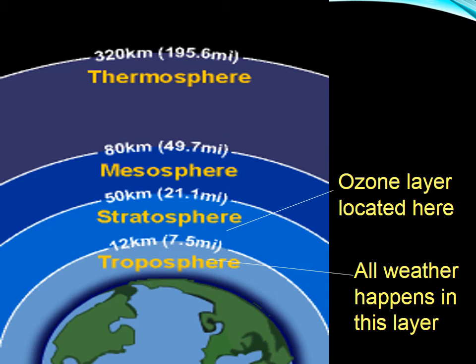Going up from eight miles, 21 more miles above that is the stratosphere. 50 more miles is the mesosphere, and almost 200 miles up into the atmosphere is the thermosphere. All weather happens in the troposphere — the layer closest to Earth — and that's also where airplanes fly. The ozone layer is in the stratosphere, right above the troposphere. It's incredibly important that we protect our ozone layer so it can protect us from the sun's harmful UV rays.